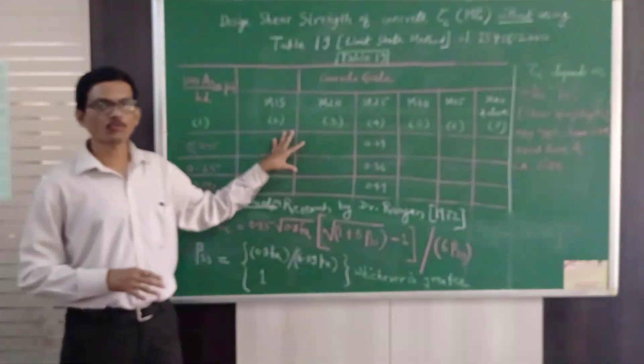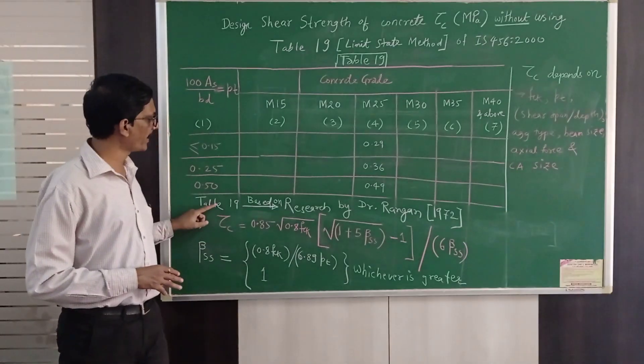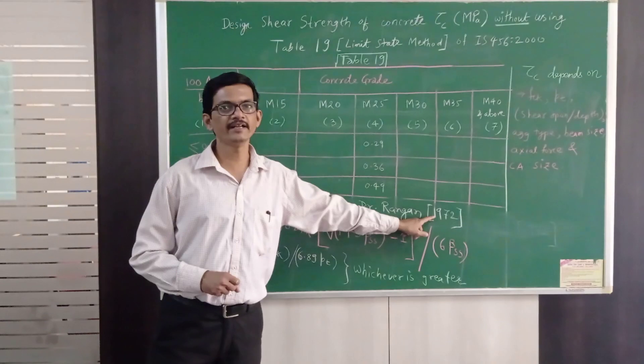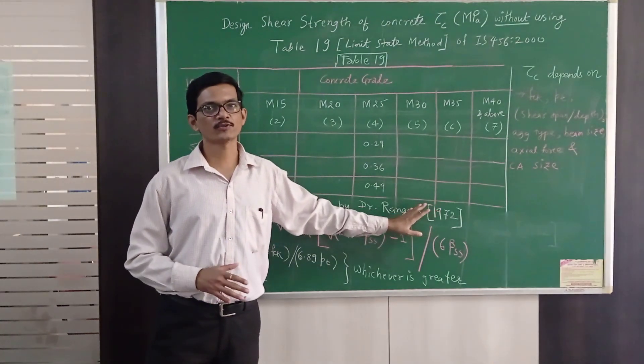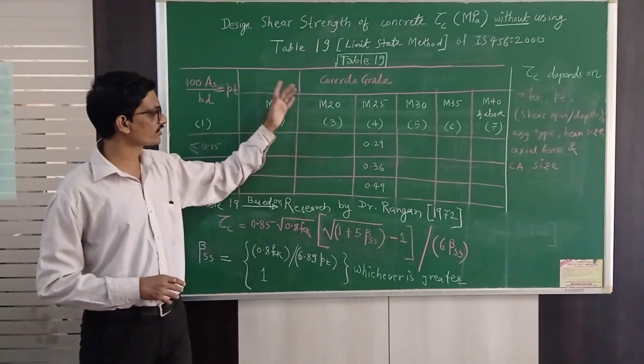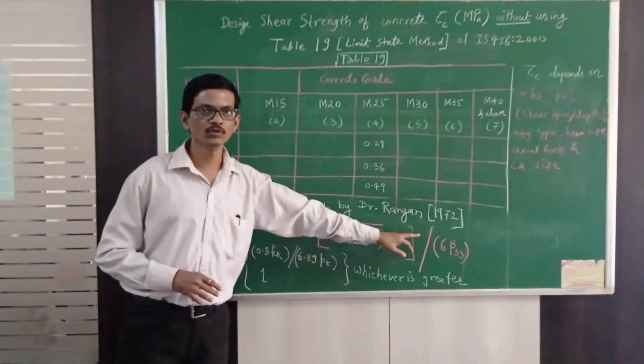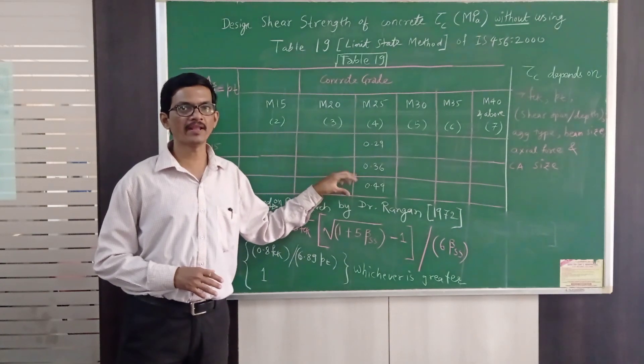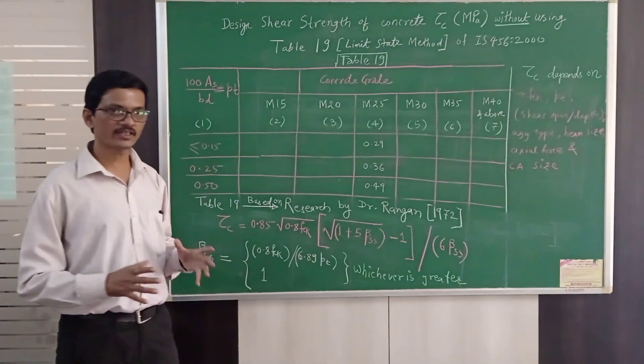This table is an outcome of research by Dr Rangan in 1972. He did vast experiments to arrive at design shear strength of concrete in 1972 and this table is an outcome of empirical research done by him.